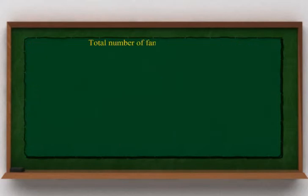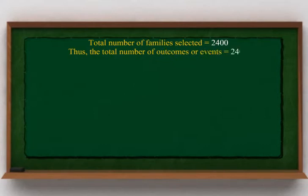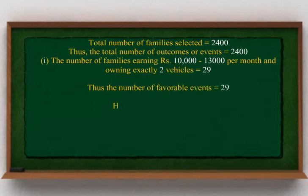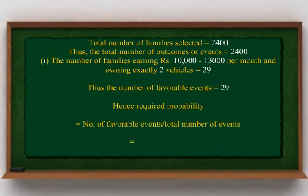Total number of families selected is equal to 2400. Thus, the total number of outcomes or events is equal to 2400. The number of families earning ₹10,000 to ₹13,000 per month and owning exactly 2 vehicles is equal to 29. Thus, the number of favorable events is equal to 29. Hence, the required probability equals 29 divided by 2400.